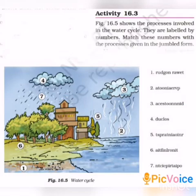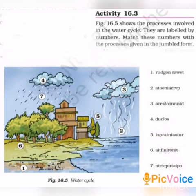Let us do Activity 16.3. Figure 16.5 shows the processes involved in the water cycle, labelled by numbers. Match these numbers with the processes given in jumbled form. The first process is groundwater.